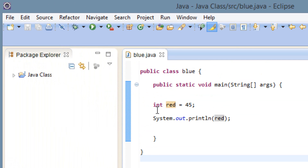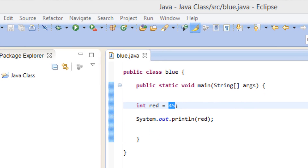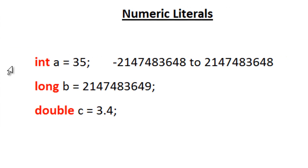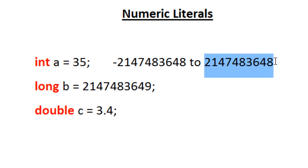Since this is an integer it has limitations. You can only assign certain values — it has a range. With integer types, it can only be between negative 2,147,483,648 and positive 2,147,483,648. Now if the value is greater than this number, the program will get an error message.